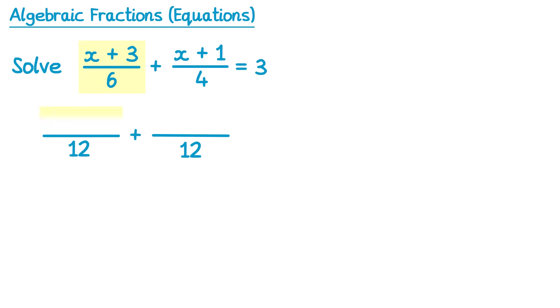If we compare these two fractions, to get from 6 to 12 on the bottom we must have multiplied by 2, so we need to multiply the top by 2 — that's 2 lots of x plus 3. For the second fraction, on the bottom to get from 4 to 12 we've multiplied by 3, so we multiply by 3 on the top: 3 lots of x plus 1. And the right hand side is still equal to 3.